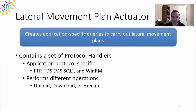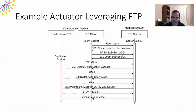The Lateral Movement Plan Actuator crafts a set of requests to perform the assigned action plan, such as uploading a file to a remote FTP server. It has a set of protocol handlers, each of which is responsible for a specific application protocol. This example shows how the FTP protocol handler uploads a file to a remote server using a socket duplicated from an FTP client.